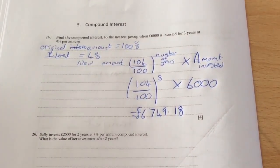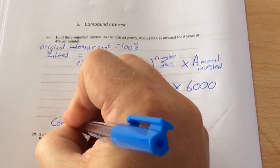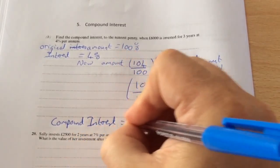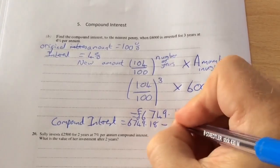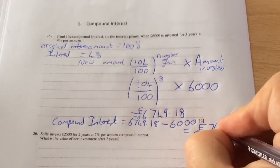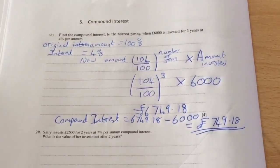That is what the amount is worth. So to work out what the actual compound interest is, you do £6,749.18 take away your starting point, which is £6000. So your actual interest is £749.18.